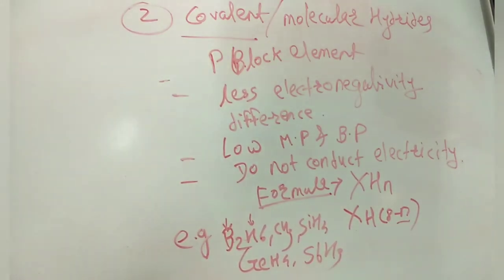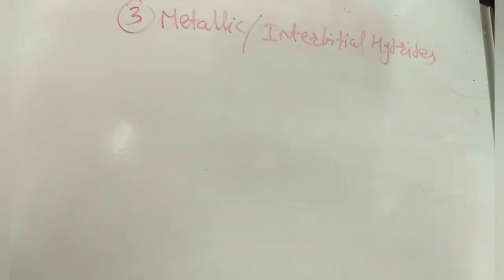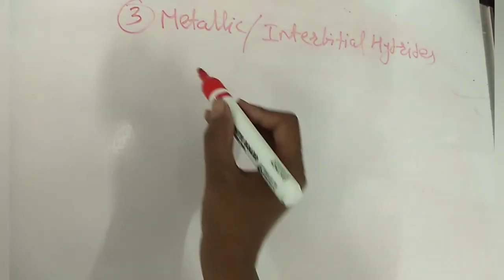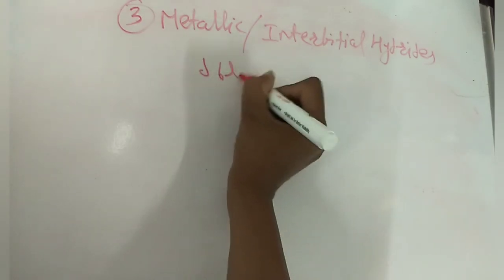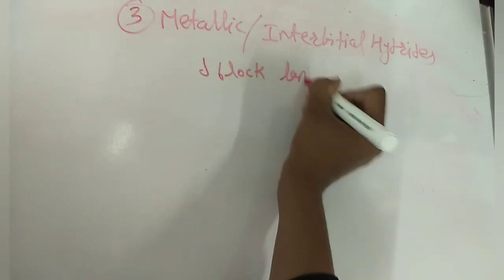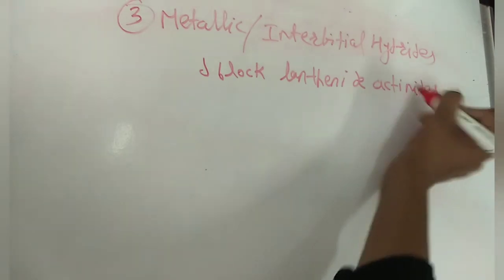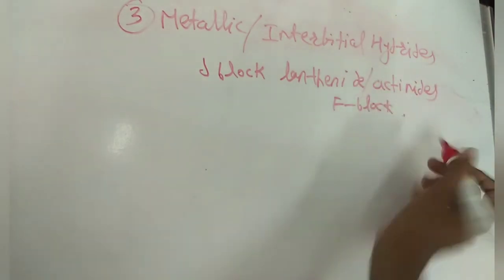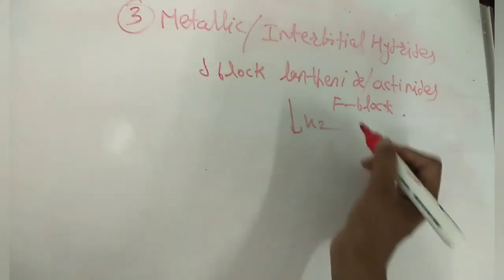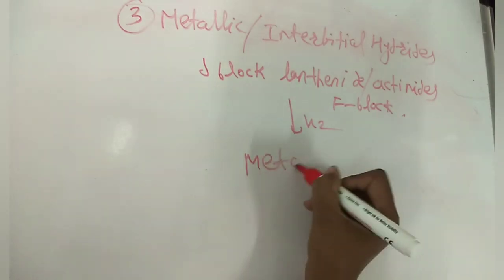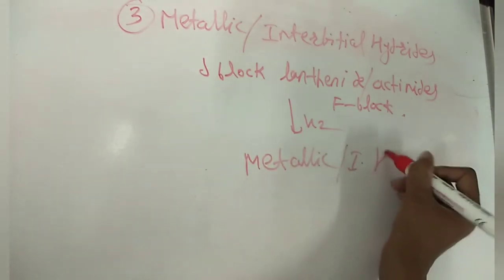The third classification is metallic or interstitial hydrides. Many D-block elements, lanthanides, and actinides (F-block elements) react with H₂ to form metallic hydrides. These metals are first heated with hydrogen at high pressure to generate metallic or interstitial hydrides.